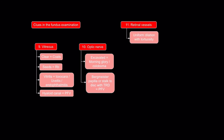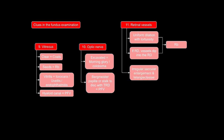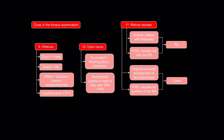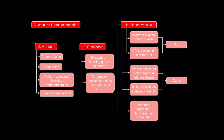Regarding retinal vessels: if they have uniform dilation with tortuosity and vessels dip into a retinal detachment, that is retinoblastoma. If there are irregular saccular enlargements and telangiectasia with vessels on the surface of a retinal detachment, it's more likely Coates disease. If there's peripheral dragging and fibrovascular proliferation, that's FEVR.